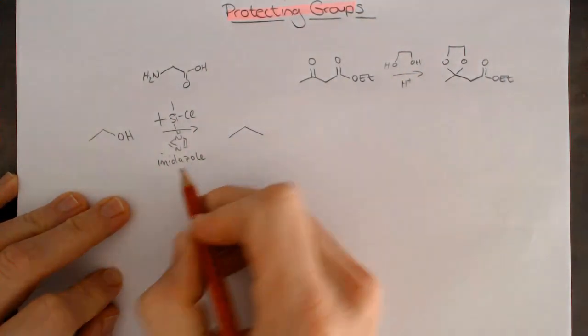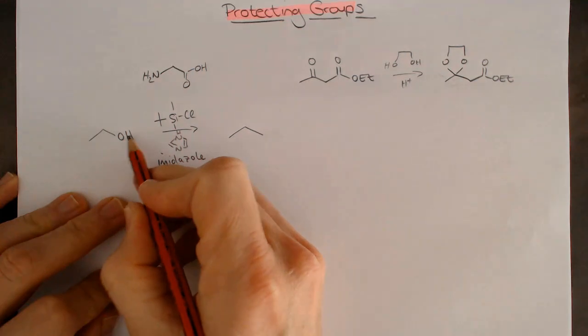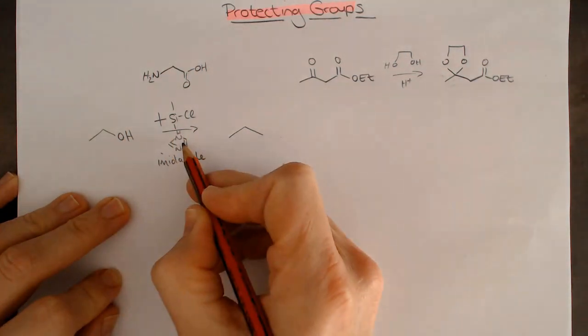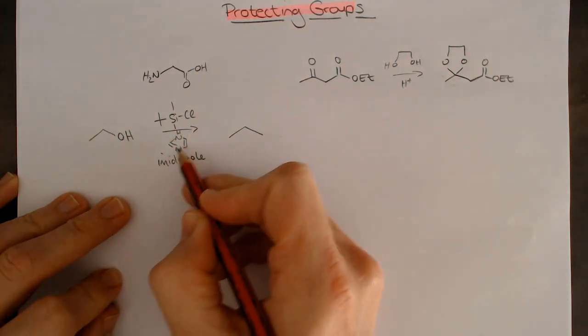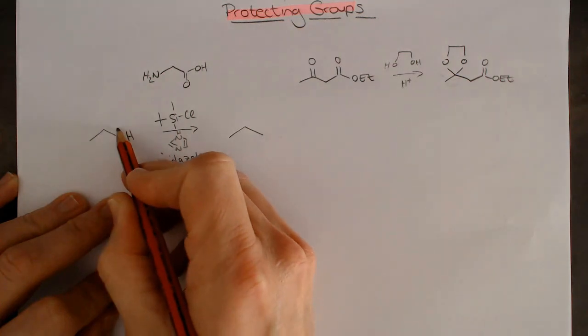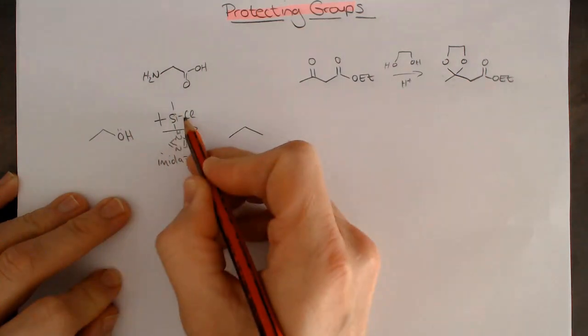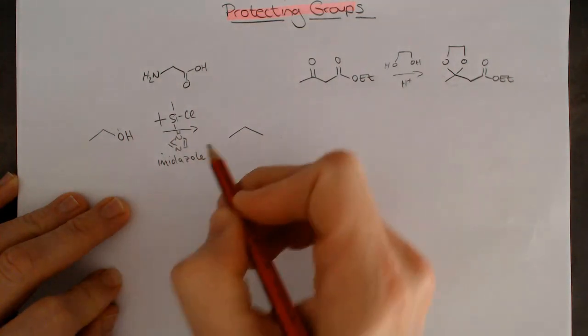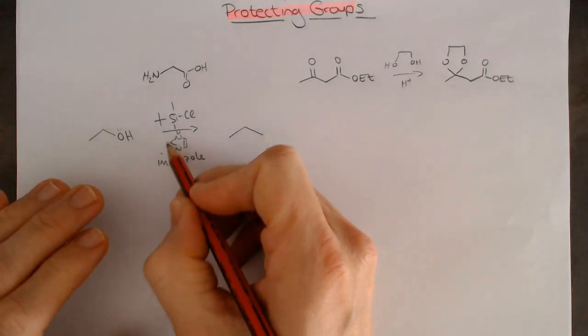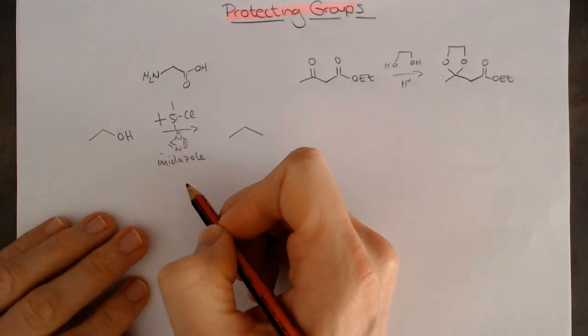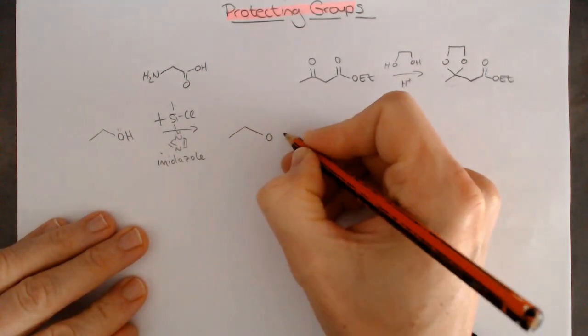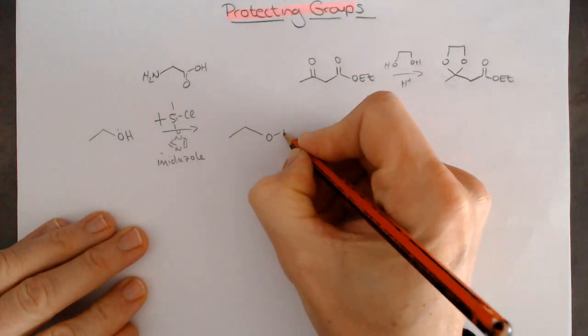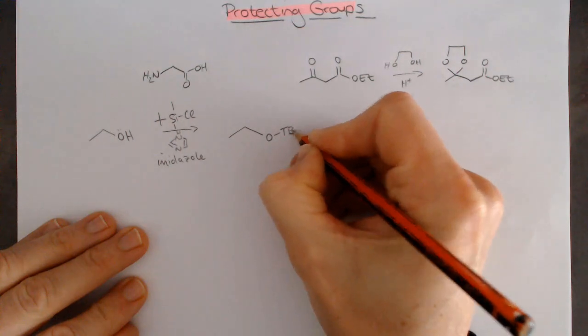The mechanism is this is not a strong enough base to remove this proton. The pKa is an amine base, it's not strong enough. This is going to go to the silicon, kick out the chlorine, and then this base will pick up the proton. There's a slightly different version to this mechanism, but that's okay. And then we introduce the TBS group.